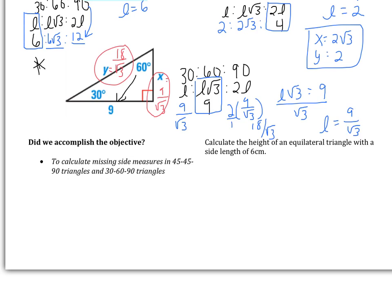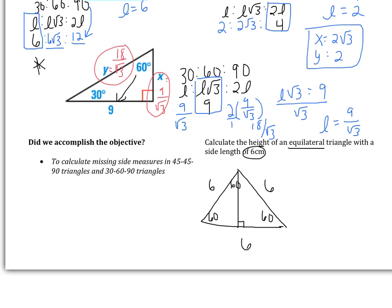This video covered 45-45-90 triangles with ratio L, L, L√2, and 30-60-90 triangles with ratio L, L√3, 2L. Here's one more example for you: calculate the height of an equilateral triangle with a side length of 6. Equilateral means all sides are 6, and all angles are 60 degrees. Drawing the height splits the top 60-degree angle into 30 and 30, creating a 30-60-90 triangle. Find the height, and bring your work to class tomorrow.